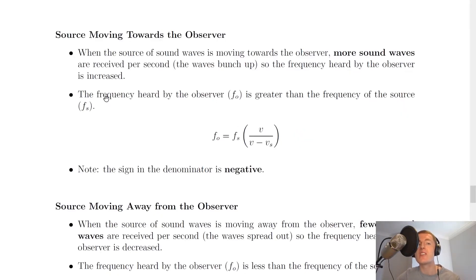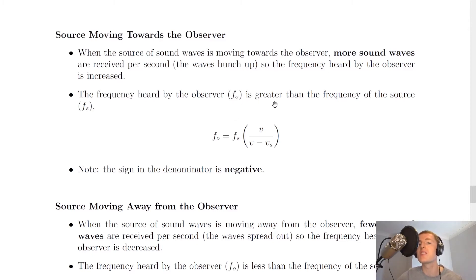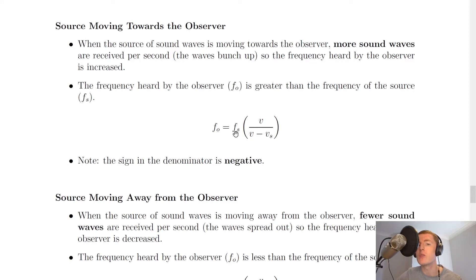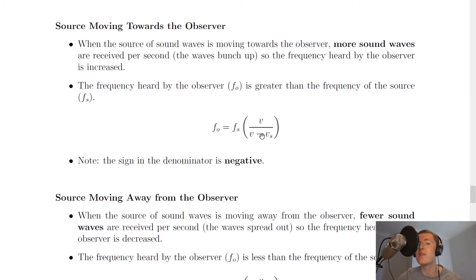Going back to the notes: the frequency heard by the observer, given the symbol f subscript o, is greater than the frequency of the source, given the symbol f subscript s. The equation for this is fo = fs × v / (v − vs), where v is the speed of the sound waves and vs is the speed of the source. Note that the sign in the denominator is negative — we'll see why this is important in a moment.